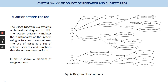Chart of options for use: the usage diagram is a dynamic or behavioral diagram in UML. The usage diagram models the functionality of the system using actors and use cases. The use cases are a set of actions, services and functions that the system must perform. Figure four shows a diagram of usage options.